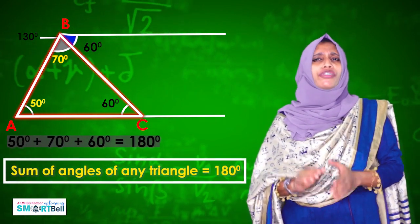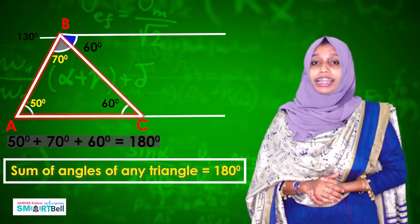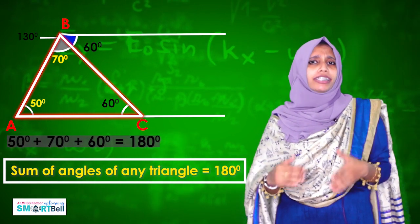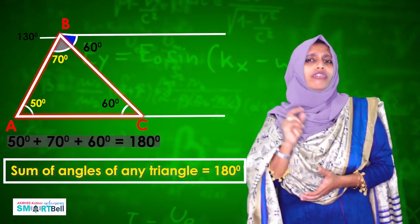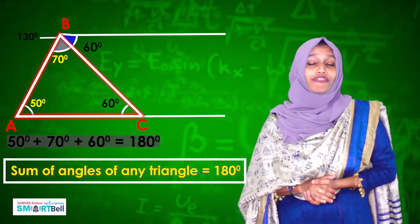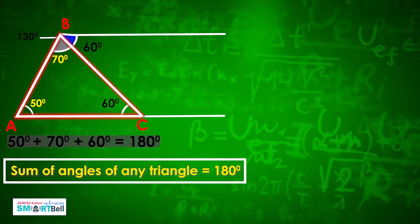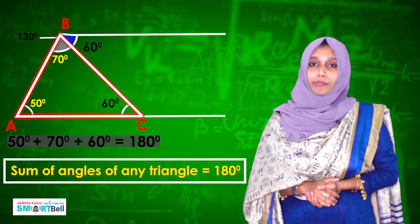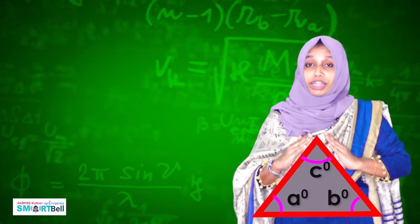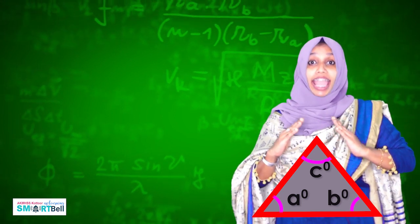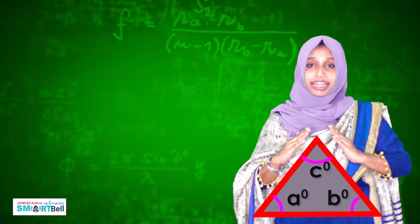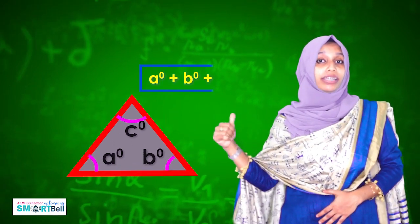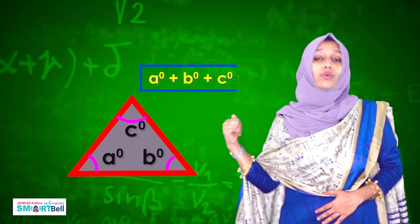That means the sum of angles of any triangle is 180 degrees. This is very important. If you take any triangle, you will get the sum of angles as 180 degrees. Please take your notebook and draw more triangles — you will get the sum of angles as 180 degrees. This is a speciality of the triangle and is called the angle sum property. If the measures of the angles of a triangle are A degrees, B degrees, and C degrees, then their sum is 180 degrees.